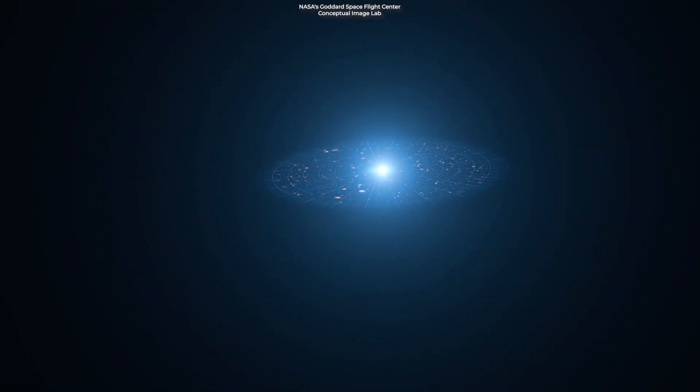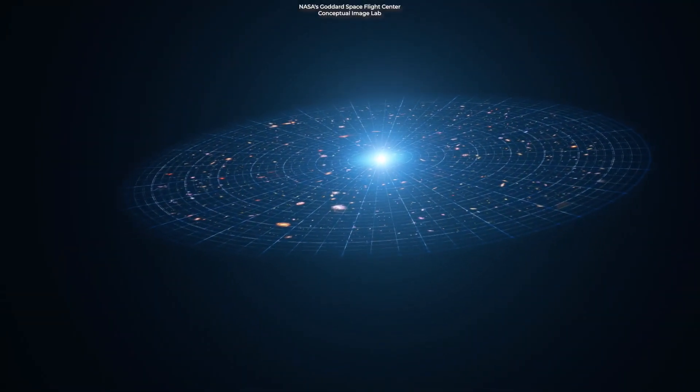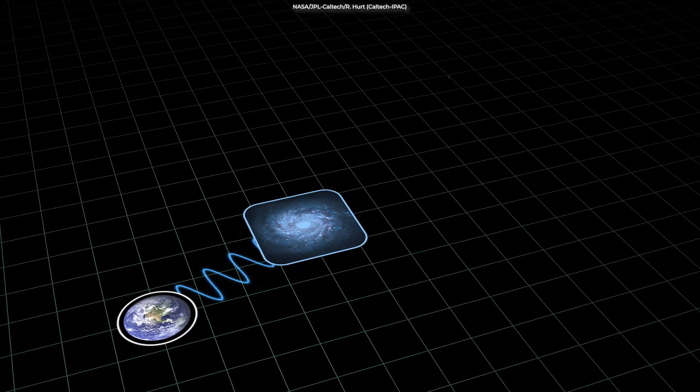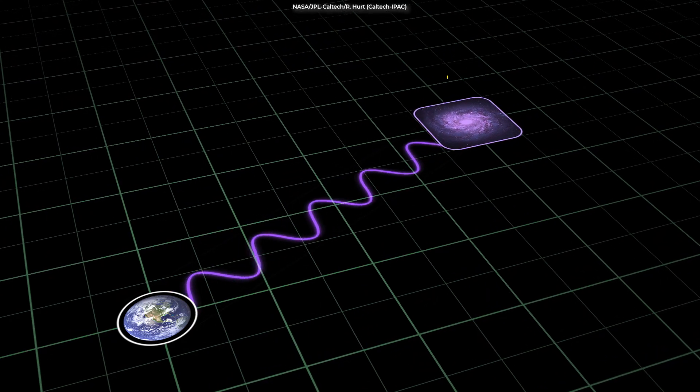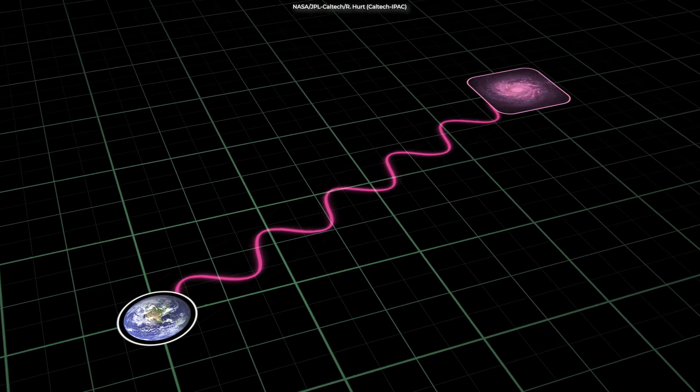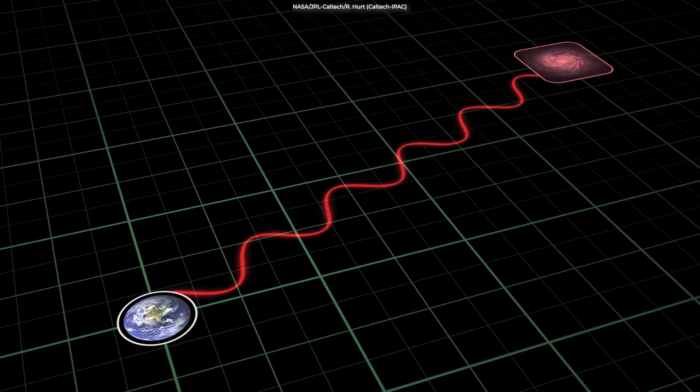As the universe expands, it continuously stretches the wavelength of light traveling through it. This is called redshift because it shifts light of shorter wavelengths, like blue or white light, to longer wavelengths like red or infrared light.